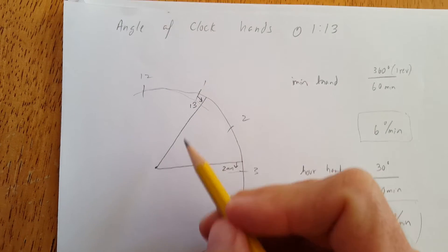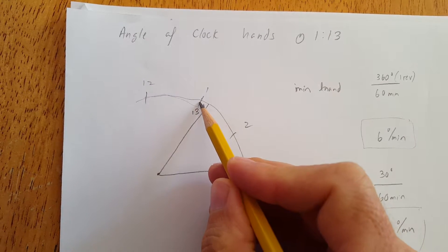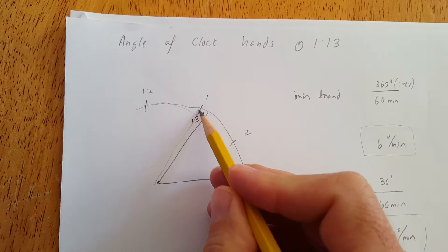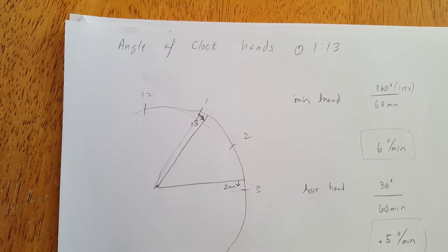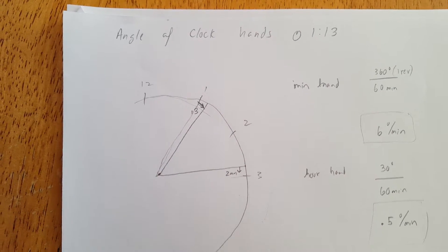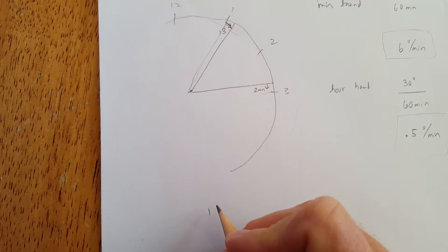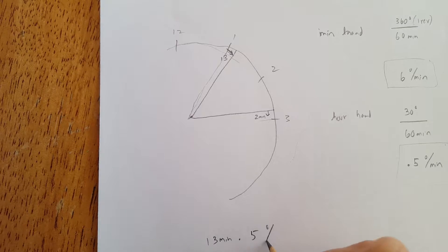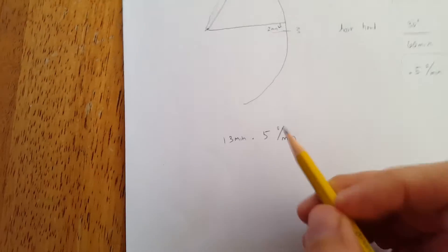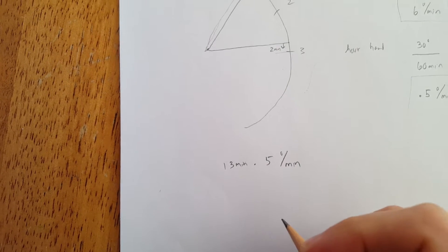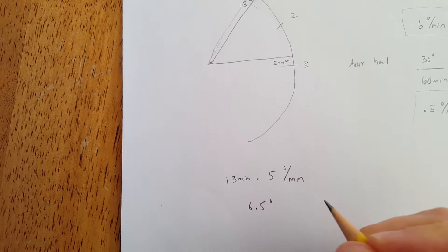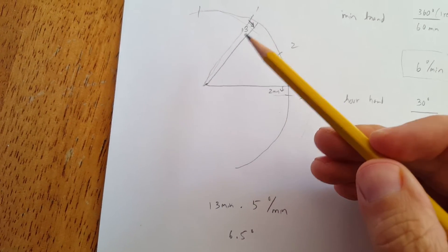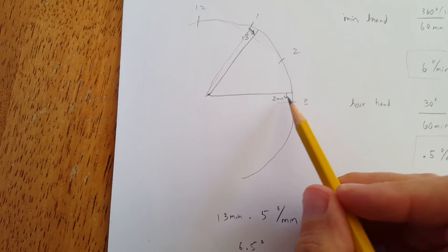Now we go back to our picture. So the way I did this is we can just look at what this, let's determine what this angle is here. So 13 minutes, this is the hour hand again. Down here. 13 minutes times 0.5 degrees per minute. The minutes cancel. What's half of 13? 6.5. So that means this pie slice up here is 6.5 degrees. So that's good.